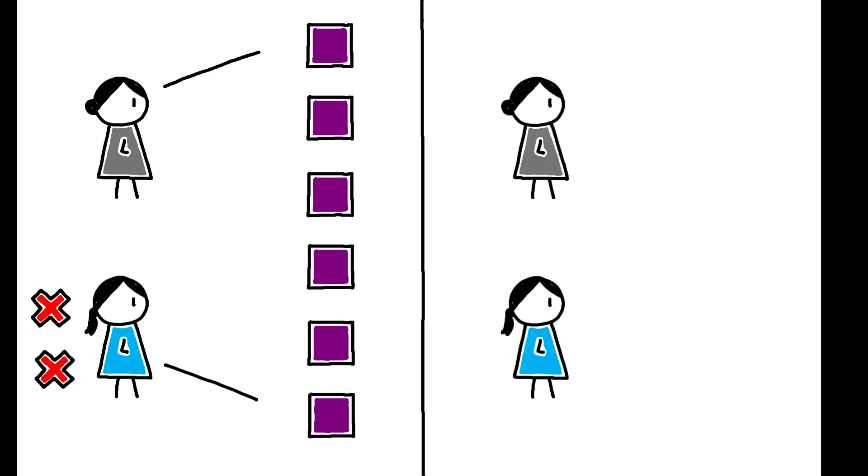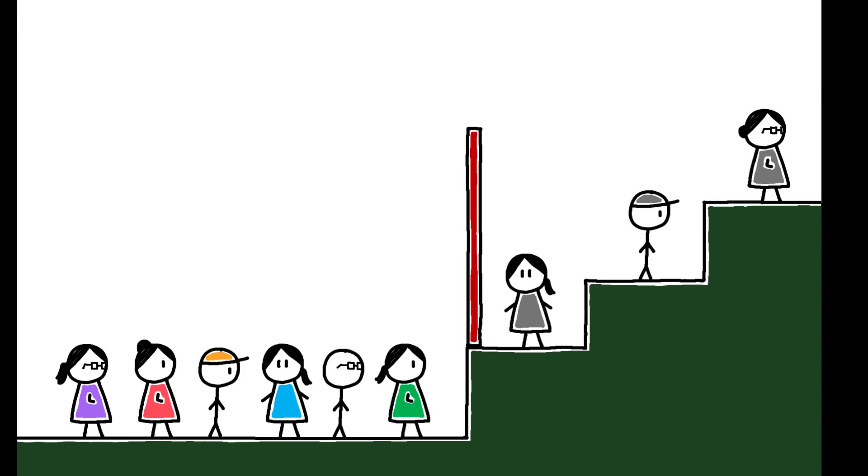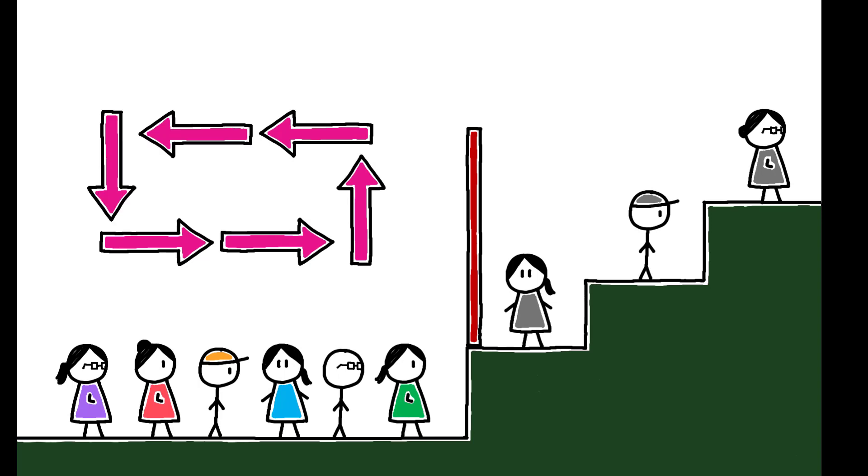The second argues that the poor face different opportunities because they are born poor. Specifically, there may be a wealth threshold below which people are stuck in a poverty trap, while those above the threshold have the means to pursue high-earning occupations.